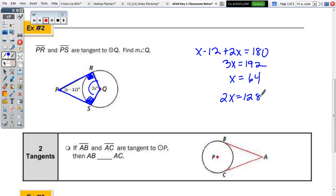So, angle Q is 2 times X. So, double 64. 128 degrees. So, 128 degrees equals the measure of angle Q. So, two tangents.